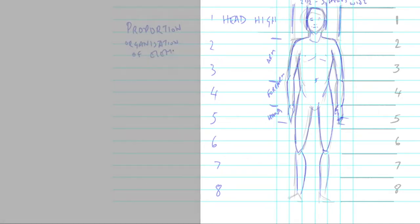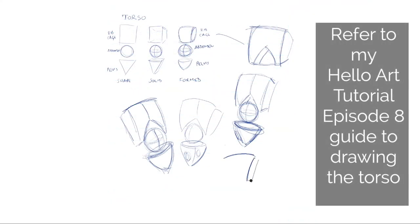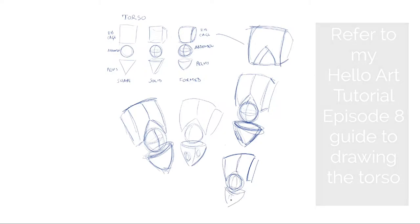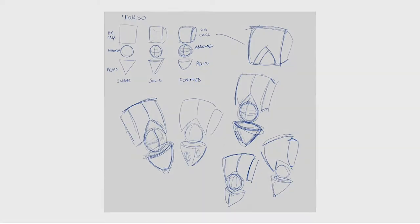So now we're going to follow on from an earlier episode Drawing Made Easy, which was of drawing the torso, and we never got on to putting the arms and legs on. So now we know a bit more about proportion, we're going to be able to draw the cylinders that make up the arms and the legs and attach them to the torso that we looked at in episode eight.